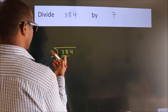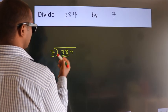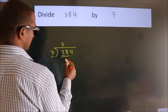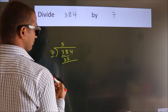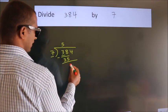A number close to 38 in the 7 table is 7 fives, 35. Now we should subtract, we get 3.